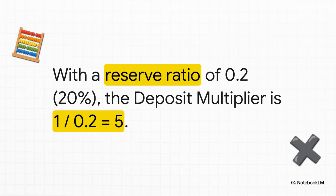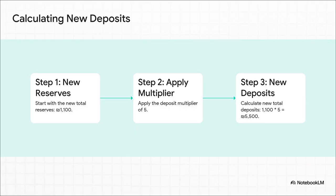In our example economy, the rules say banks have to keep 20% of their deposits in reserve, so the ratio is 0.2. We plug that into our formula: 1 divided by 0.2 gives us a multiplier of 5. What does that mean? It means that for every single shekel the banks hold in reserve, the system as a whole can support 5 shekels in deposits. That's some serious leverage. So we take our new reserve pile of 1,100 shekels, multiply by 5, and we get 5,500 shekels — the new potential total for all deposits. We started at 4,500. That is a huge jump.